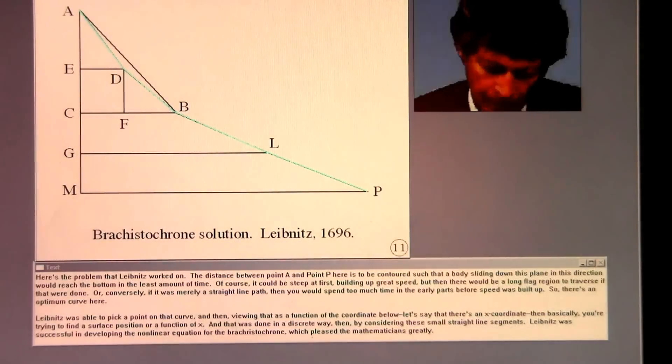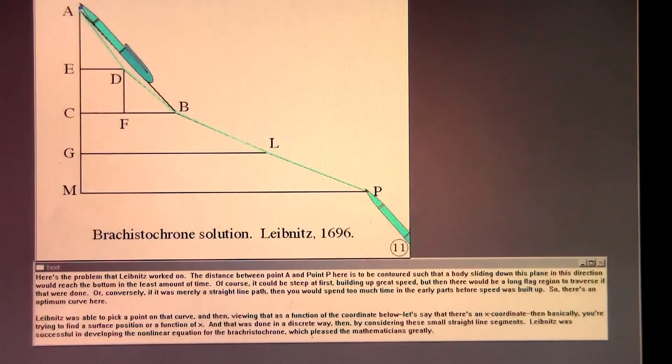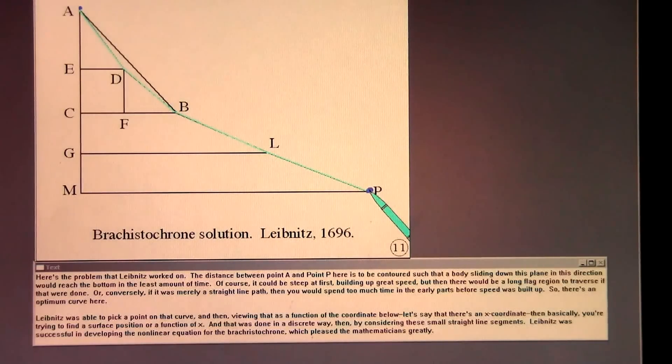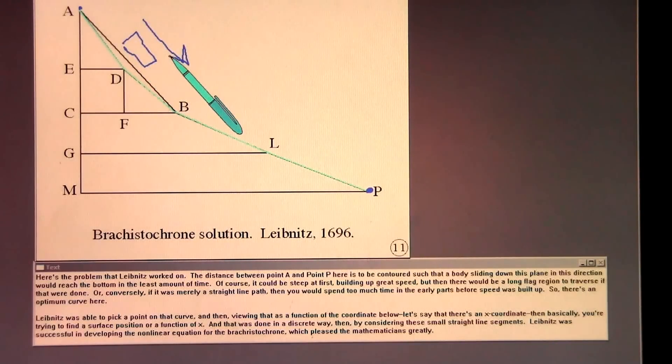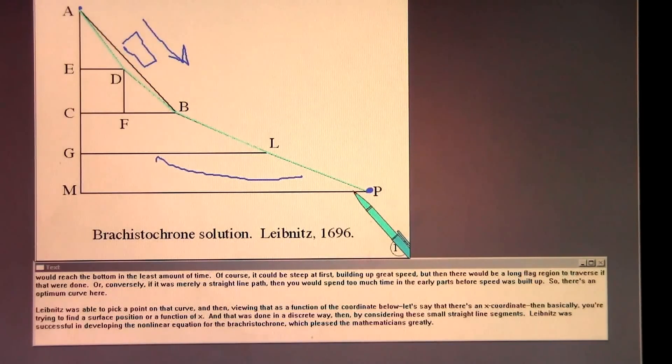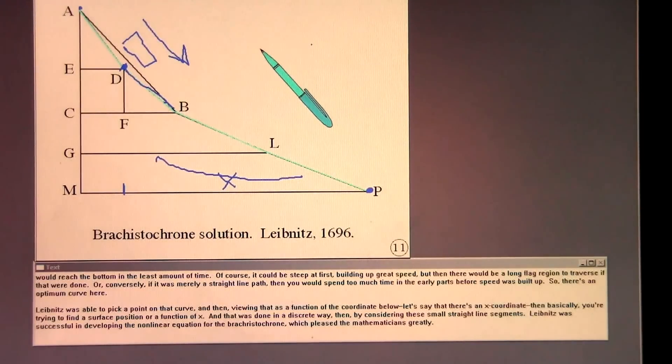Here's the problem that Leibniz worked on. The distance between point A and point P here is to be contoured such that a body sliding down this plane would reach the bottom in the least amount of time. Of course it could be steep at first building up great speed, but then there would be a long flat region to traverse. Or conversely, if it was merely a straight line path, then you would spend too much time in the early parts before speed was built up. So there's an optimum curve here. Leibniz was able to pick a point on that curve and then viewing that as a function of the coordinate, trying to find a surface position or a function of x, and that was done in a discrete way by considering these small straight line segments. Leibniz was successful in developing the non-linear equation for the brachistochrone, which pleased the mathematicians greatly.